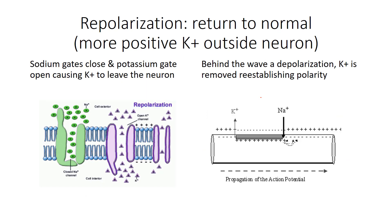That leads us now to repolarization — returning it back to normal, back to polarized. Remember the sodium-potassium pump is pumping three sodiums out and two K-pluses in, which are also positive. Seems counterproductive, but this is why we needed that positive pumped into the neuron. At maximum depolarization — shown previously as plus 40 millivolts — sodium gates slam shut. Potassium gates now open, and that causes potassium to leave the neuron.